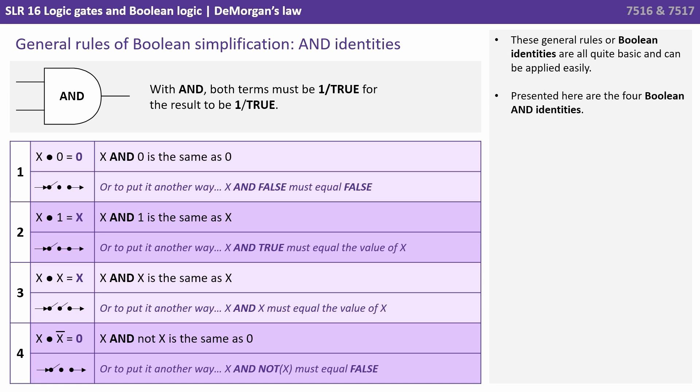The first identity here says X and zero must be the same as zero, because if we have a zero, it doesn't matter what X is, the output is never going to be one. X and one is the same as X. So if X is one, one and one is one. If X is zero, zero and one is zero. The next one says X and X is the same as X. And finally, X and not X is the same as zero.